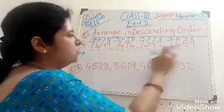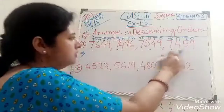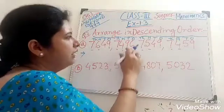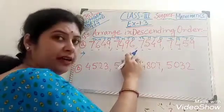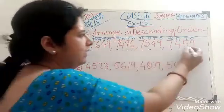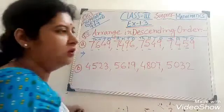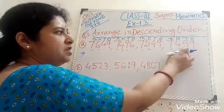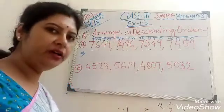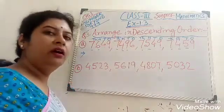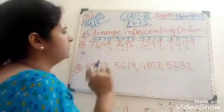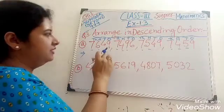Observe these two numbers, because in the 100 place both the numbers are same. So we come to compare the 10's place now. In the 10's place, here it is 9 and in the other it is 5. So this number is smaller than this number. And in case of descending order, we go from bigger to smaller.